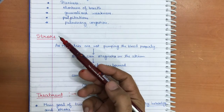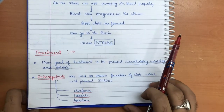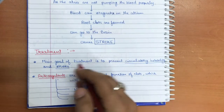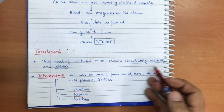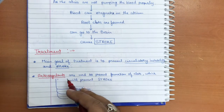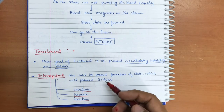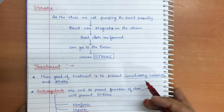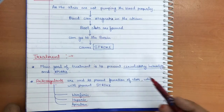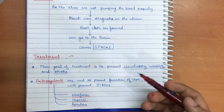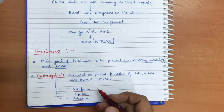The main goal of treatment is to prevent circulatory instability and stroke. First, anticoagulants are used to prevent clot formation and thereby prevent stroke. Anticoagulants used include warfarin, heparin, and enoxaparin (low molecular weight heparin).